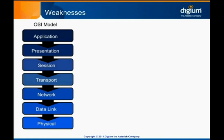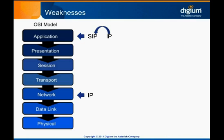Generally, each layer should be independent of the layers below it. As the OSI model applies to VoIP calls, SIP is an application layer protocol which operates on the internet protocol network layer. However, SIP violates the model by including IP addressing information in its headers. To comply with the model, SIP would have had to introduce an addressing scheme that did not rely on IP addresses. This clearly would have been a very difficult task, and almost certainly would have prevented SIP from achieving widespread adoption.